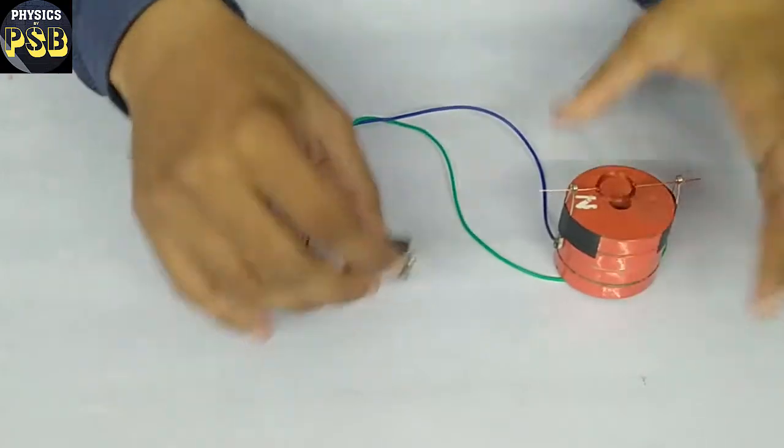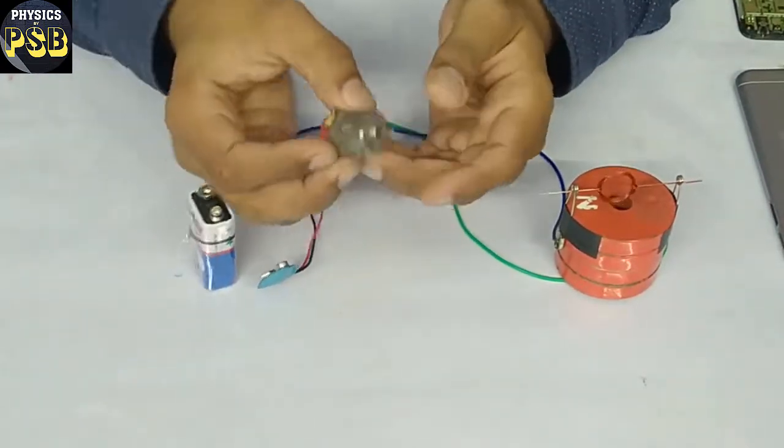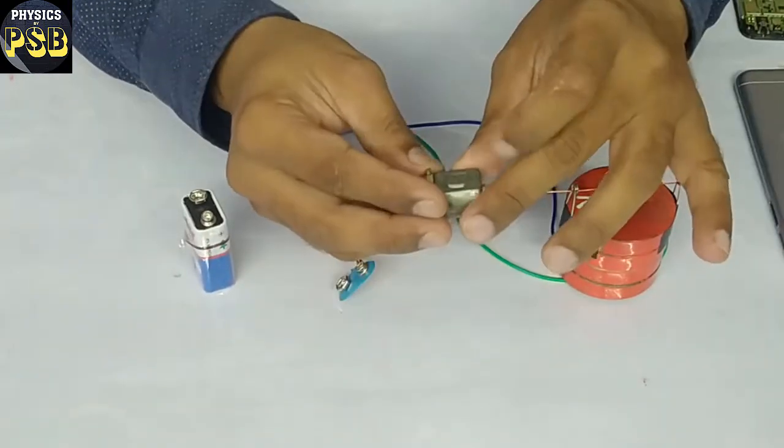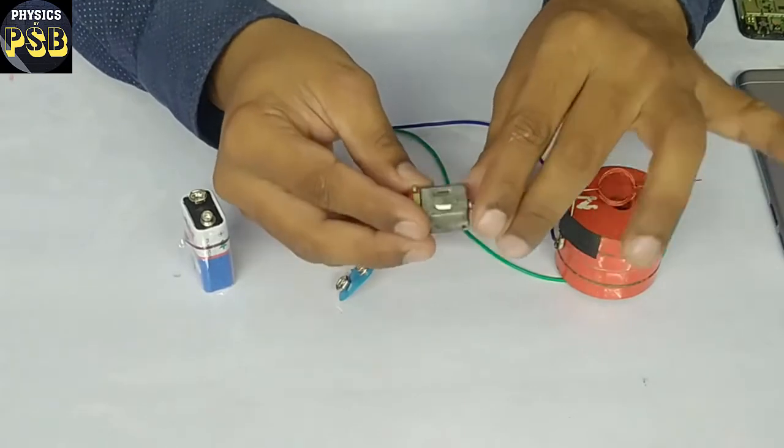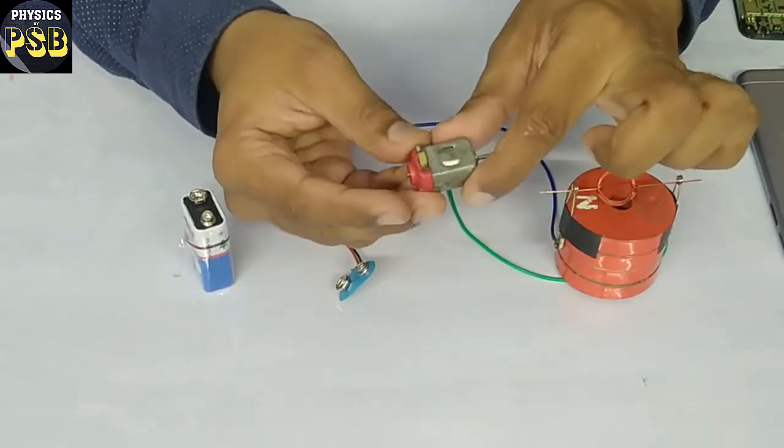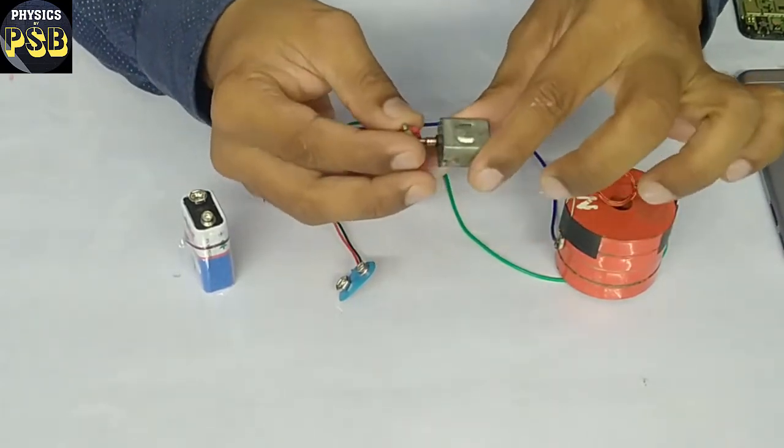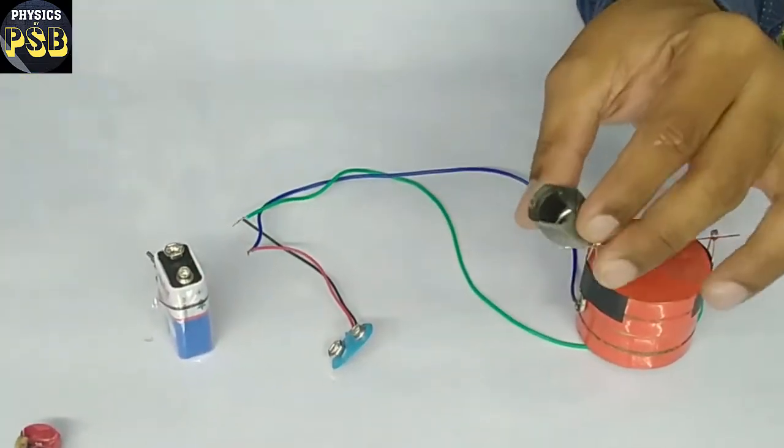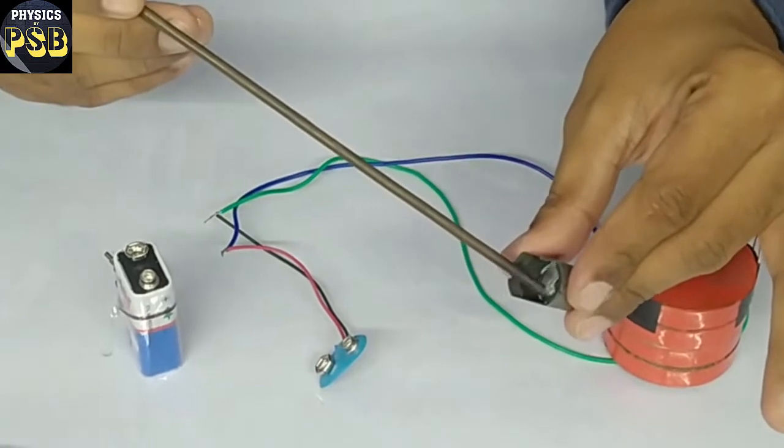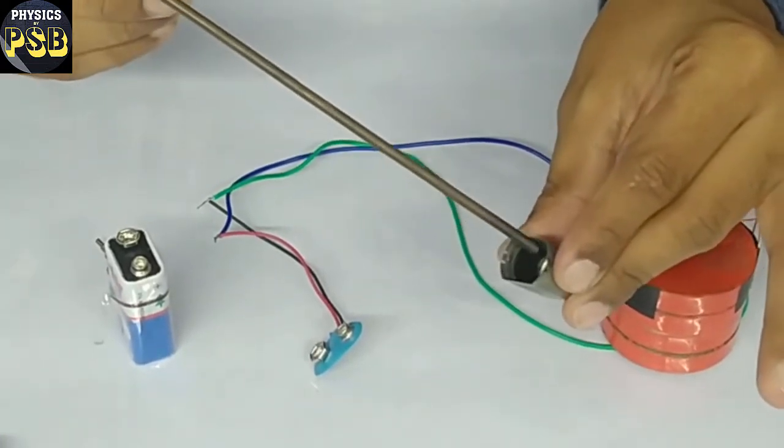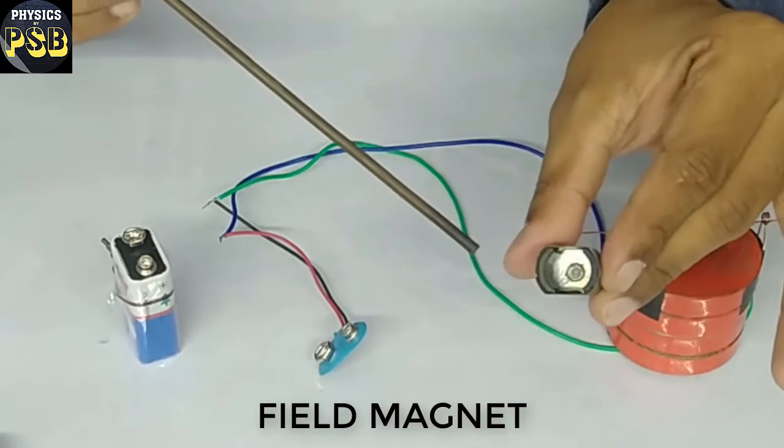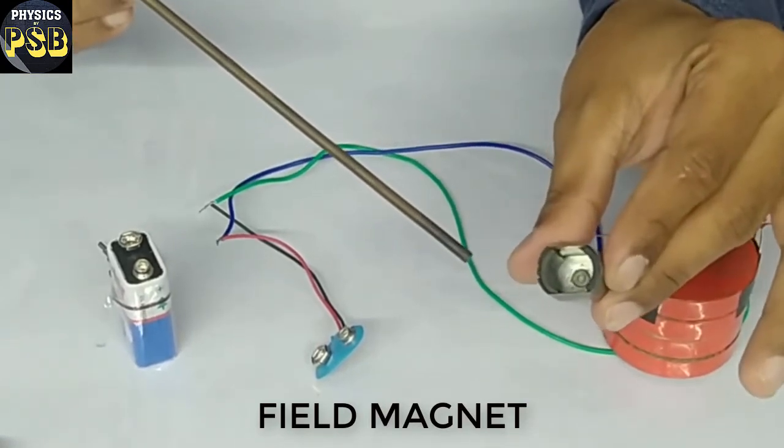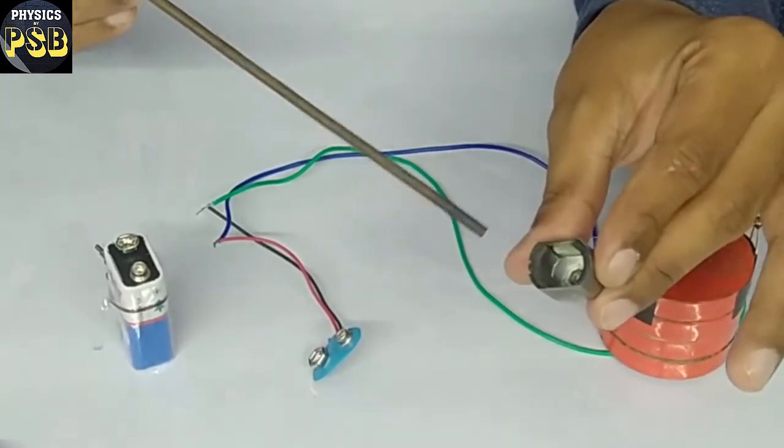You might have come across this kind of toy motor. Now I'm going to show you different parts of this DC motor. I'll remove it. If you look at the inside, it consists of a magnet called a field magnet. It is used to produce magnetic field.